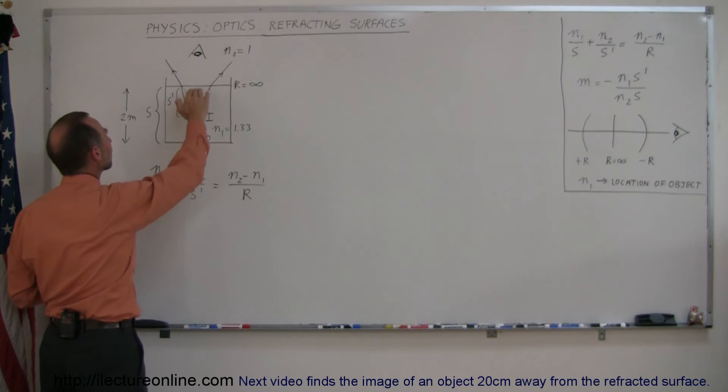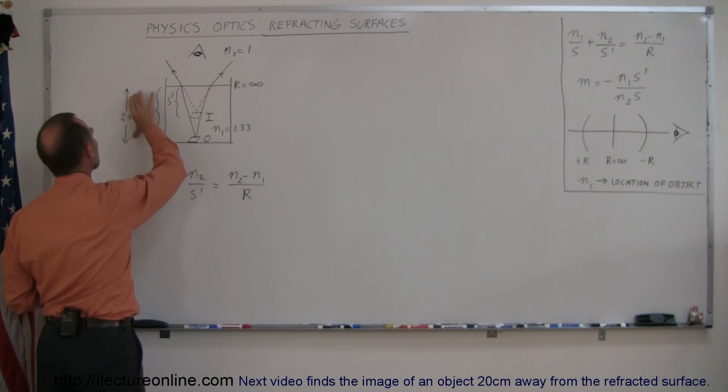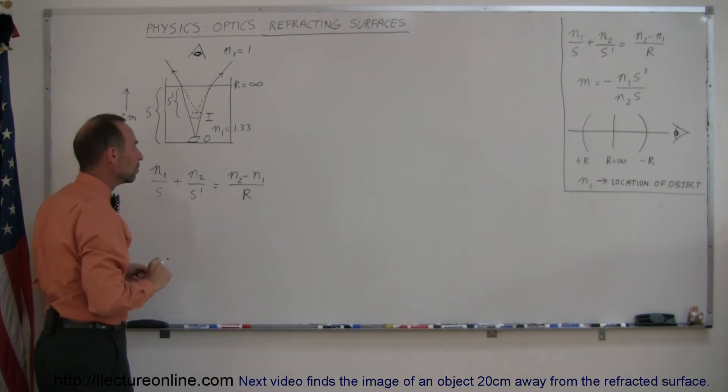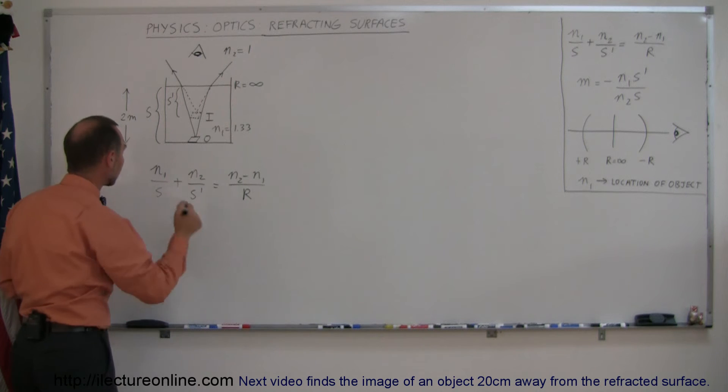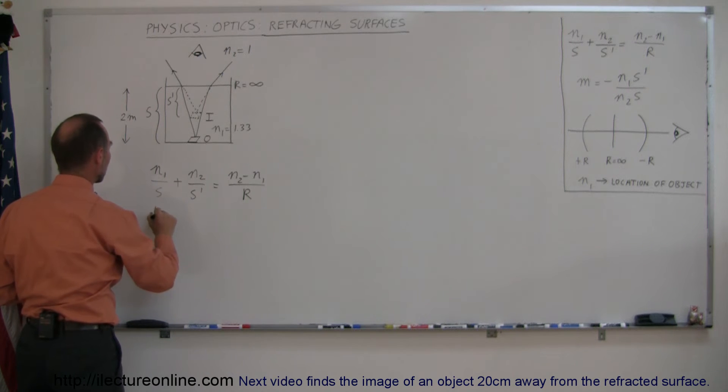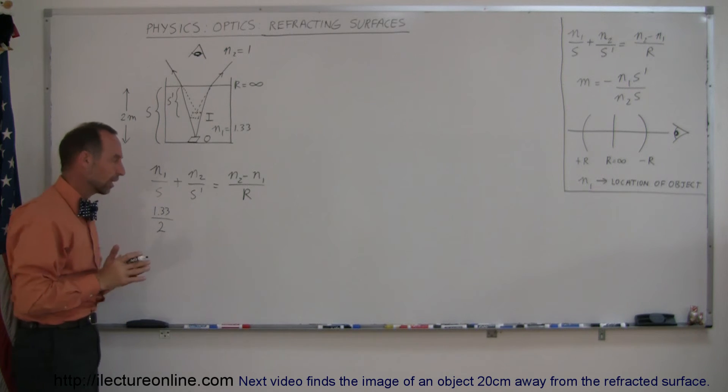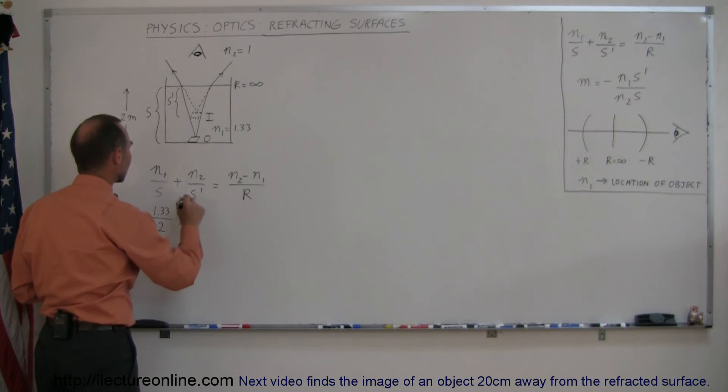Since the object is at the bottom of the pool, it is 2 meters away, so the object distance is 2 meters. Now let's plug in all the numbers. N1 would be 1.33 divided by 2 meters, plus N2, which is 1, divided by S prime, which is what we're looking for.